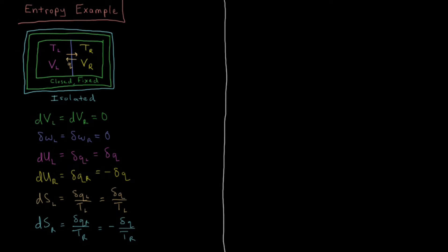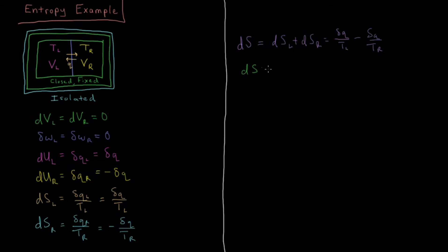So what is the total entropy change for the system? dS for the total isolated system is just the sum of the entropy of each component: dSL plus dSR. That equals dQ over TL minus dQ over TR. Factoring out dQ, we get: dS equals dQ times the quantity (1/TL minus 1/TR).